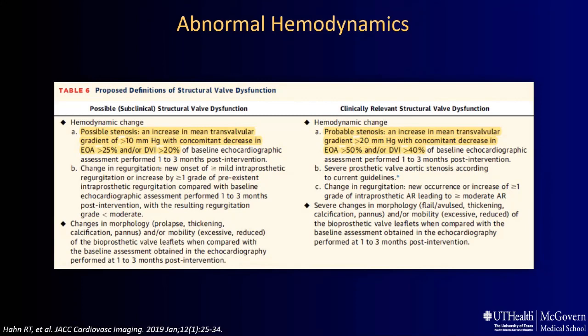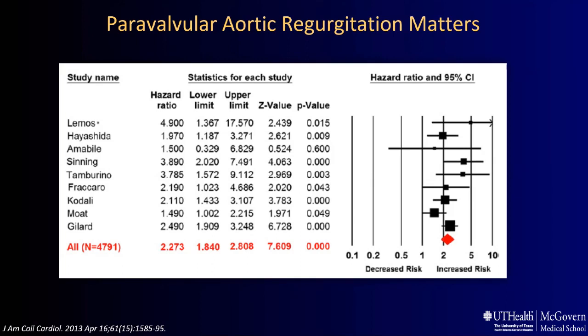Now let's talk about paravalvular aortic regurgitation, also known as paravalvular leak. This meta-analysis shows why this matters. Although it is from the first generation of transcatheter valves — newer generations have a much lower incidence — moderate or severe PVR was associated with a 2.3-fold increase in one-year mortality. Similar results were noted in the PARTNER 2 trial, which also shows significantly worse outcomes in those with moderate or higher paravalvular leak compared with no or trace paravalvular leak. At least moderate PVR in more contemporary studies remains associated with increased risk of death and heart failure.